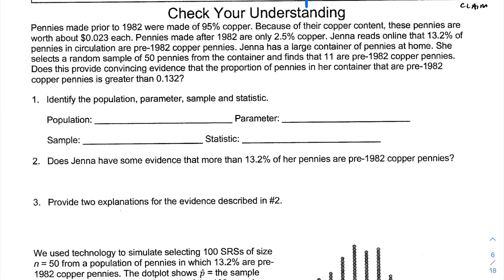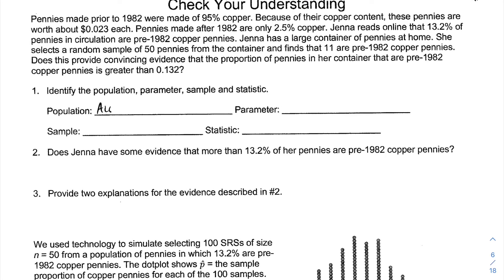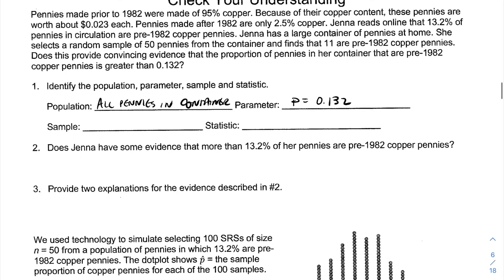She reads this claim online, pulls out a handful of pennies, and finds that she has far more pre-1982 pennies than expected. She wonders if the claim is really true. In situations like this, we identify our population — all pennies in the container — with parameter p = 0.132, or 13.2%. Our sample is the 50 pennies pulled out, and our statistic is p-hat = 11/50 = 0.22. The p-hat represents a statistic in this case.